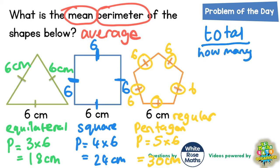We're going to do the total divided by how many. The total is 18 plus 24 plus 30. So 8 plus 4 plus 0 is 12, put the 2 in, carry the 1. 1 plus 2 is 3, plus another 3 is 6, plus another 1 is 7. So the total of all the perimeters is 72 centimeters.